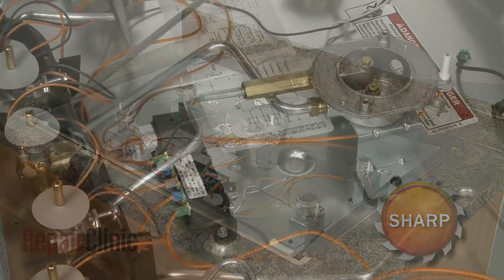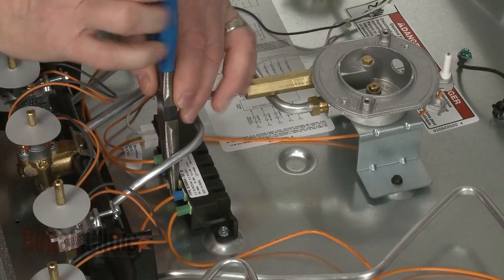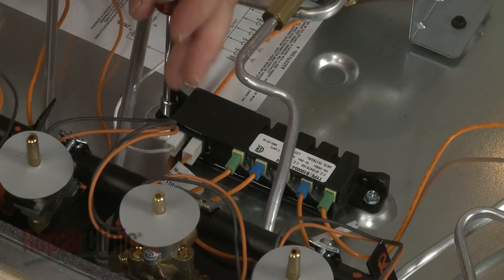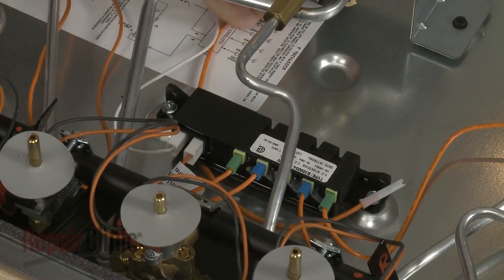Disconnect the center spark electrode wire from the spark module. You may have to loosen one of the screws securing the module to the base to free the wire.